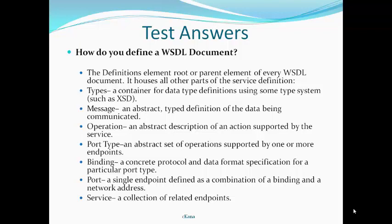Answer to Question 8 — How do we define a WSDL document? The definitions element is the root or parent element of every WSDL document and houses all other parts of the service definition. Types: a container for data type definitions. Message: an abstract definition of the data being communicated. Operation: an abstract description of an action supported by the service. Port type: an abstract set of operations supported by one or more endpoints. Binding: a concrete protocol and data format specification for a particular port type. Port: a single endpoint defined as a combination of a binding and a network address. Service: a collection of related endpoints. This is how a WSDL document is defined.